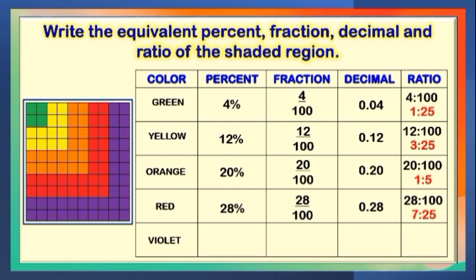The last region is shaded in color violet. The correct answers are 36%, 36 out of 100, 0 and 36 hundredths, 36 is to 100, and the lowest term is 9 is to 25.